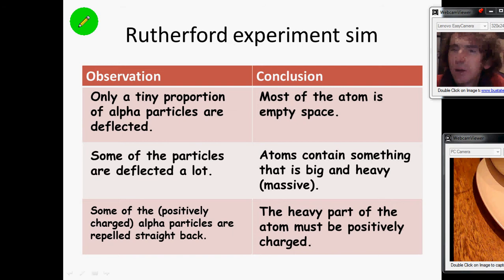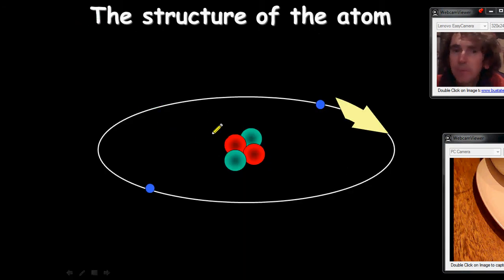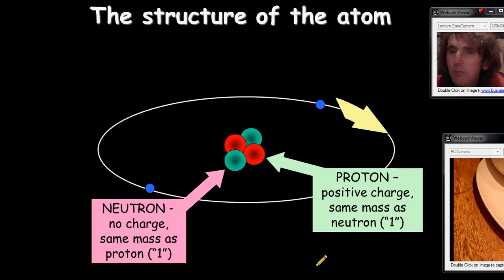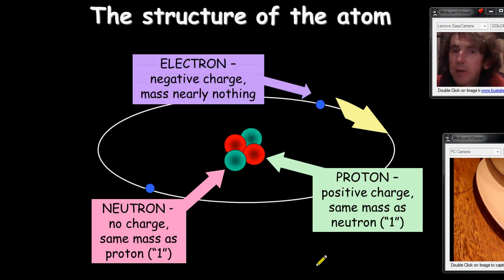This is what you've been learning since year 7. Here we go. There's the sort of model that you've seen before. So, in the middle you've got protons and neutrons. We now know they've got roughly the same mass as each other, so we call it a relative mass of 1. And around the outside we've got the electrons. So the negatively charged electrons go round and round the outside of the nucleus, which contains the positively charged protons and the neutral neutrons.